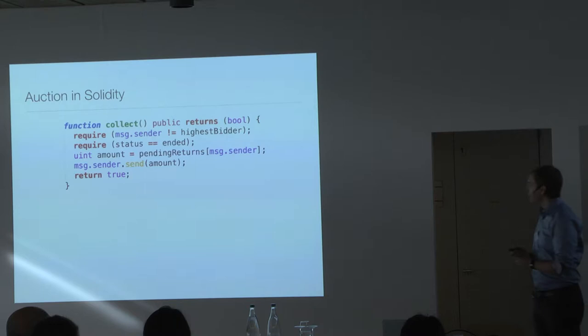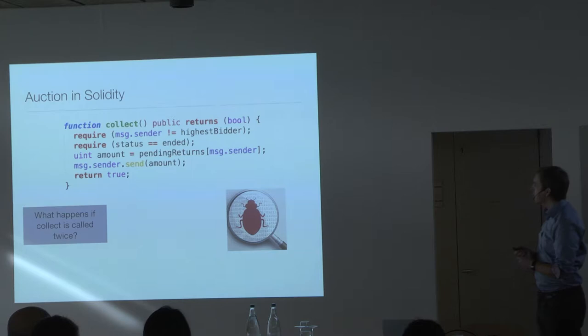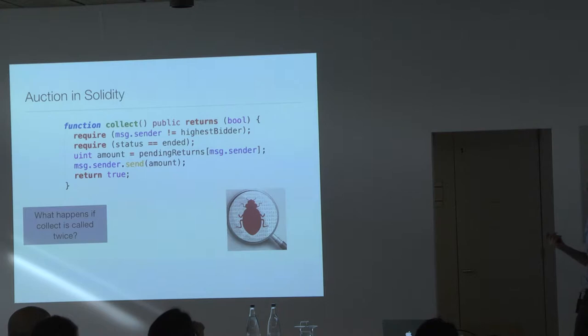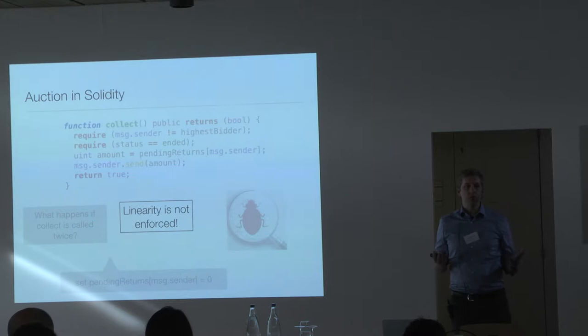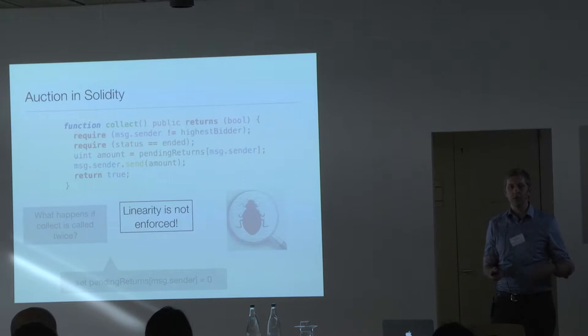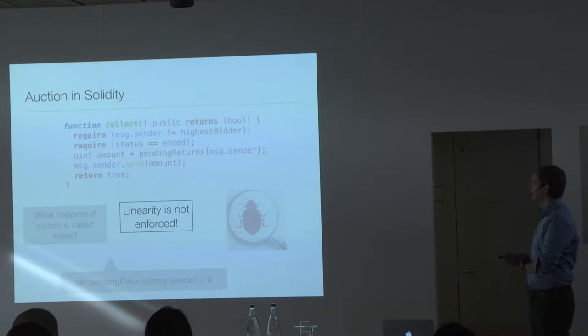The second bug: what happens if you call the collect function twice? You can collect the amount you paid two times. The fix is to update the pending returns for that sender to zero after collection. The root cause is that money is a linear resource — you cannot send it to the sender and also keep it in the hash map. This should be treated linearly, giving a static error if you try.